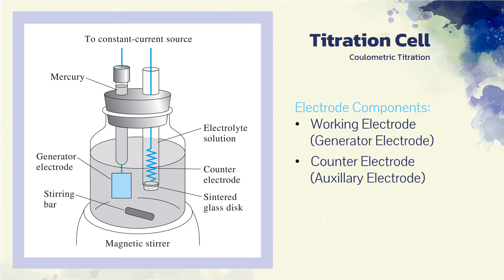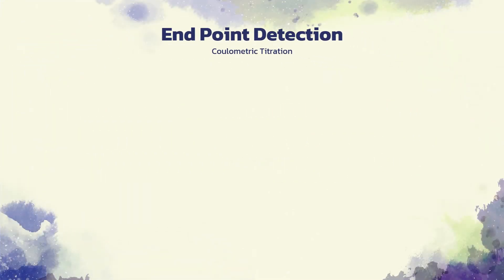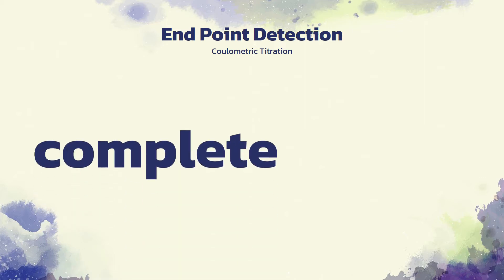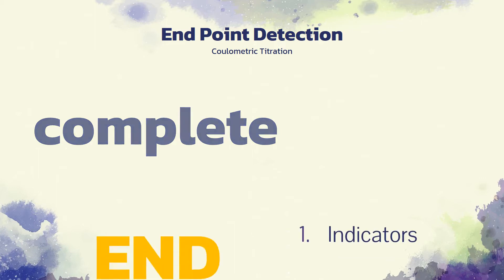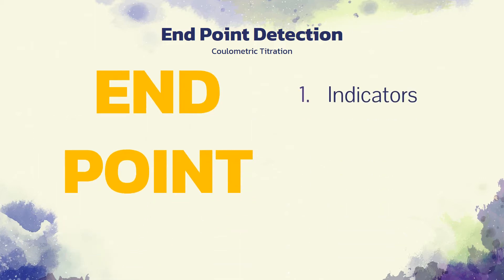The generator electrode is usually a platinum rectangle, a coil of wire, or a gauze cylinder with a relatively large surface area to minimize polarization effects. The counter electrode is usually isolated from the reaction medium by a sintered disk or other porous medium to prevent interference by the reaction products from this electrode. Coulometric titrations, like their volumetric counterparts, require a means for determining when the reaction between analyte and reagent is complete.